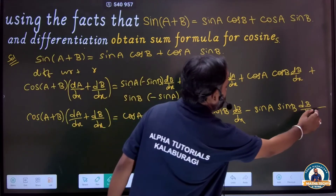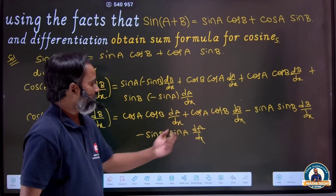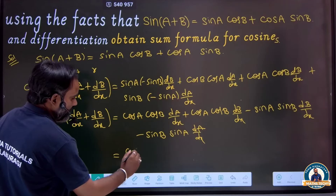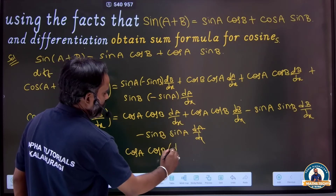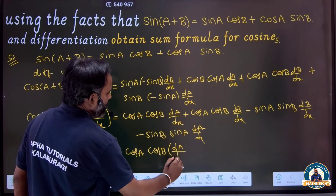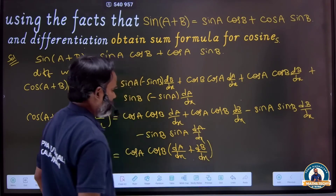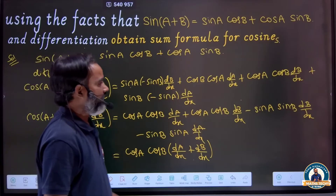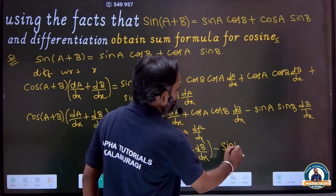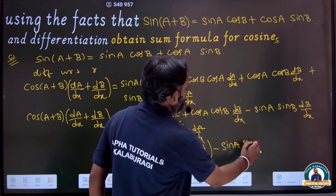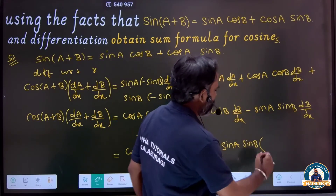Now observe what is common here. We can factor out cos a cos b, and separately factor out minus sin a sin b. Taking minus sin a sin b as a common factor gives minus sin a sin b times (db/dx plus da/dx).